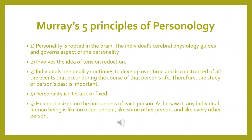The second principle involves the idea of tension reduction. We have also seen tension reduction in other theories, such as Freud's. However, according to Murray, it does not mean we constantly strive to stay tension-free. As we've seen in arousal theory, we strive to maintain an optimal level of arousal. Similarly, we need some tension to function appropriately, so Murray supports tension reduction only partially, not completely.